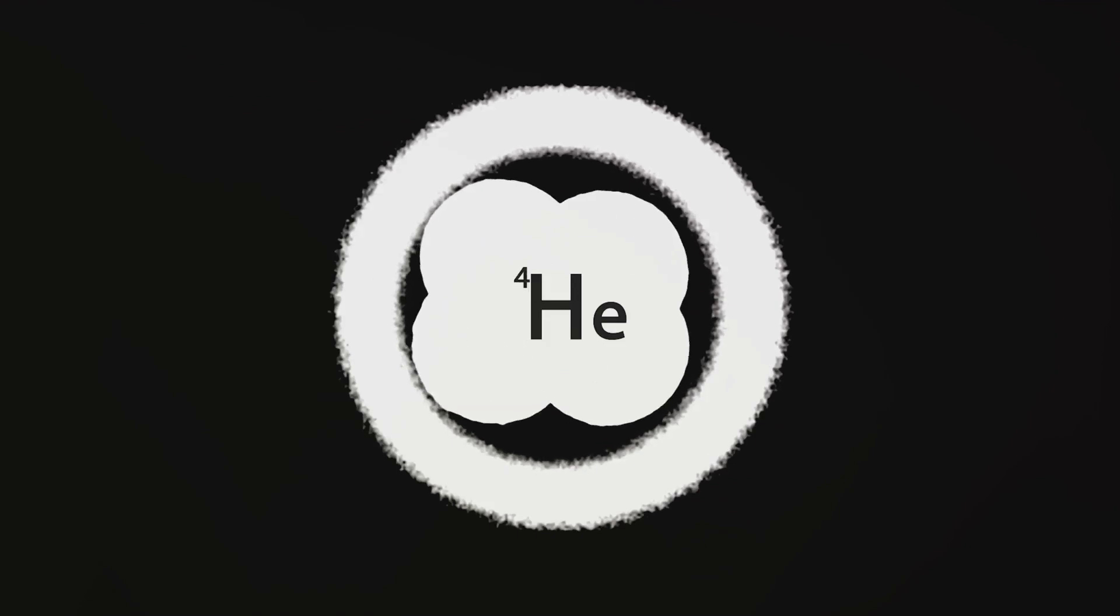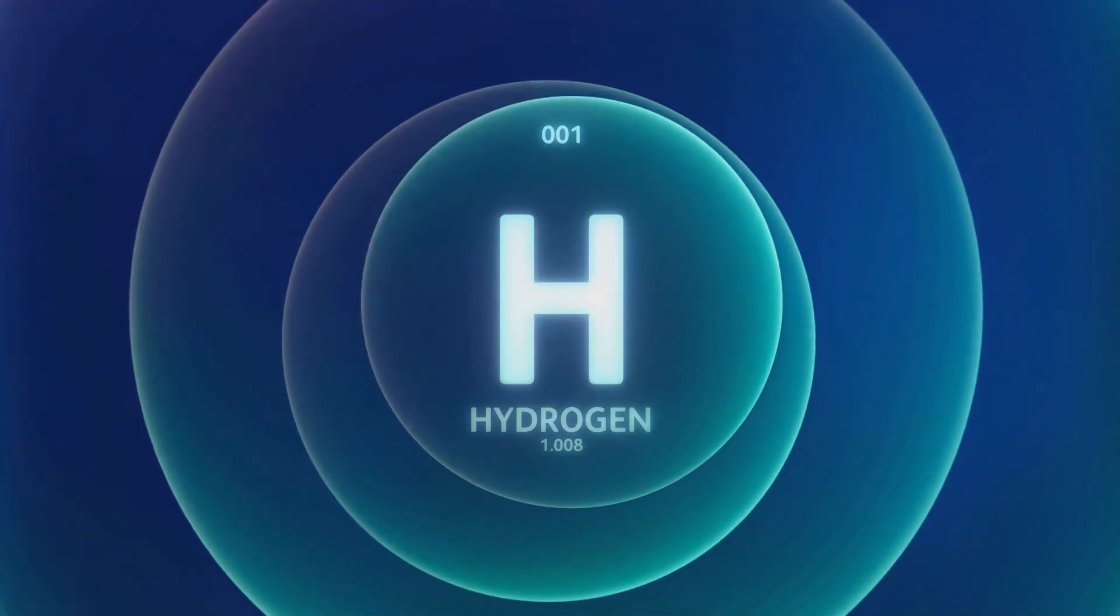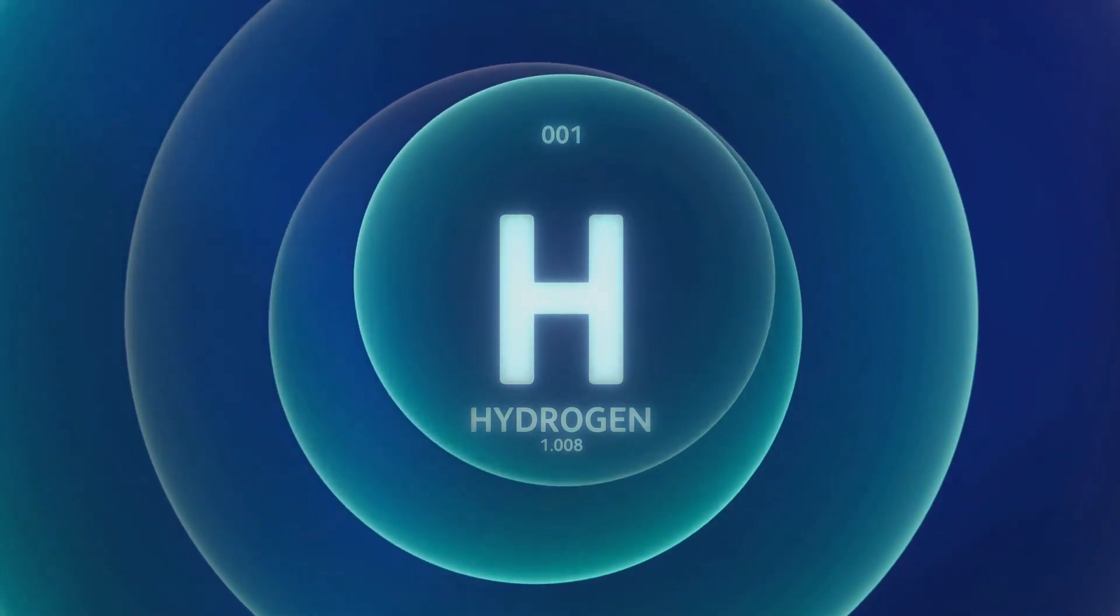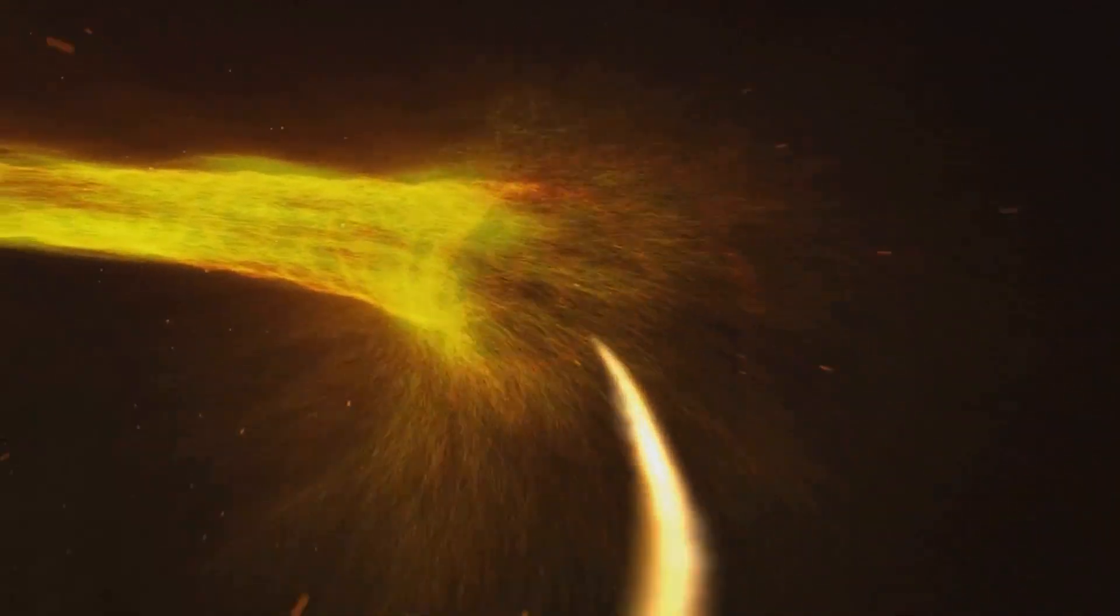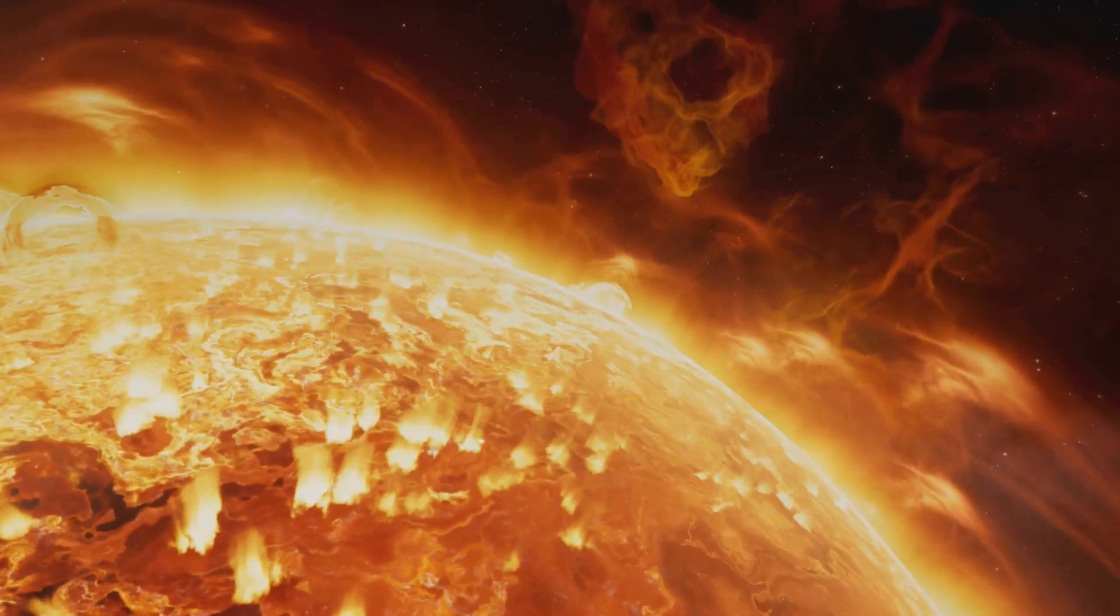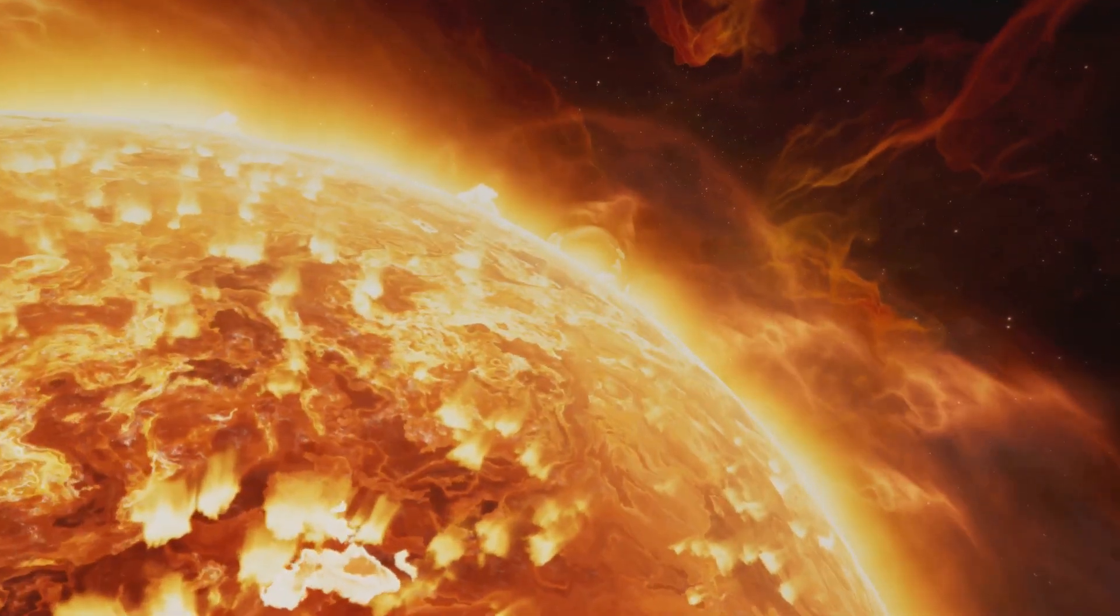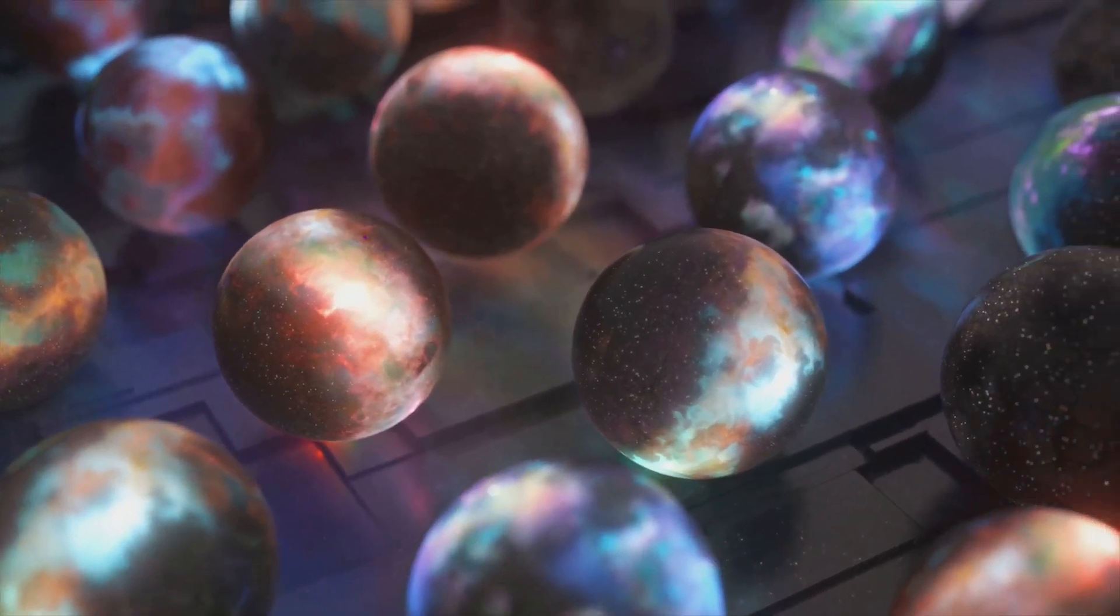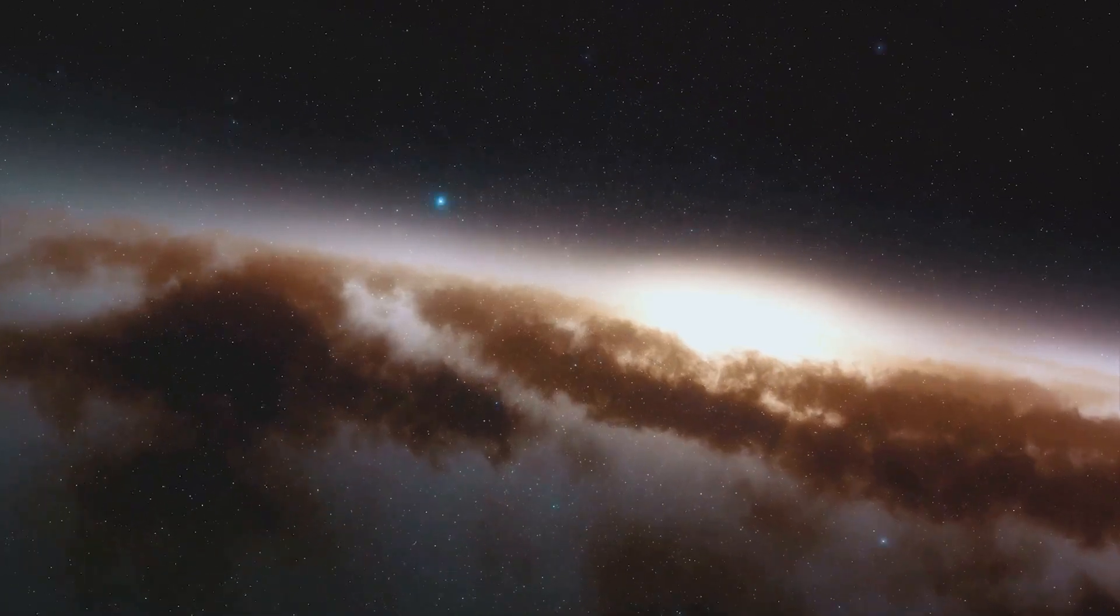The early universe was an incredibly hot and dense place filled with a soup of fundamental particles. As it expanded and cooled, these particles began to combine and form the first atomic nuclei in a process known as nucleosynthesis. This primarily produced hydrogen and helium, the simplest and most abundant elements in the universe. Yet the early universe was far from being a hospitable place for life as we know it. It was a turbulent, chaotic environment, devoid of the complex structures we see today.